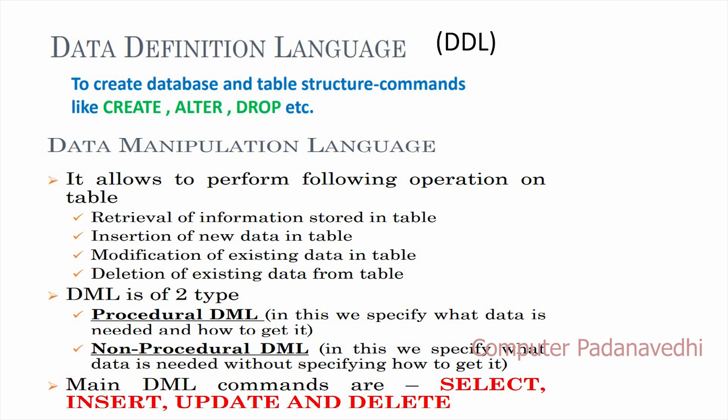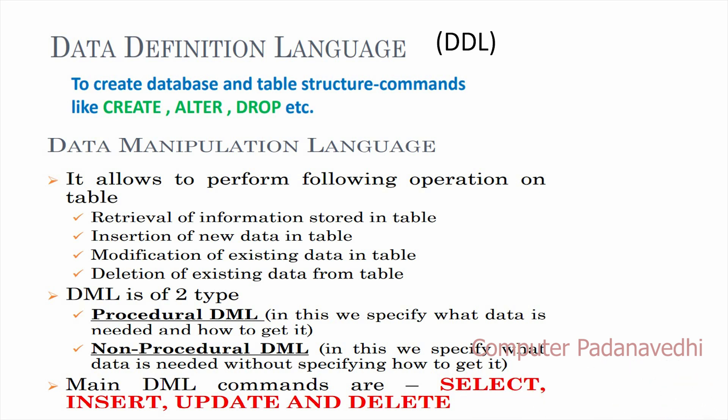In DML — Data Manipulation Language — we perform different operations on the table. These include information retrieval, insert, modification, update, and deletion. These represent changes to the entry data. In DML we have procedural and non-procedural DML. The commands are SELECT, INSERT, UPDATE, and DELETE.